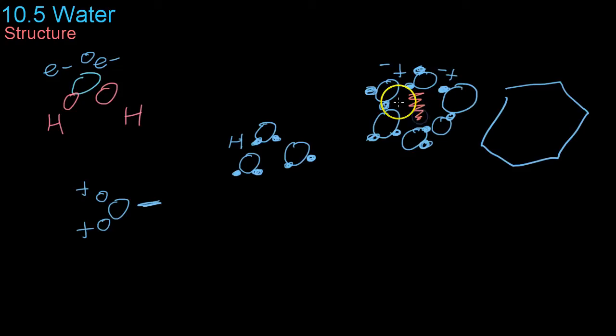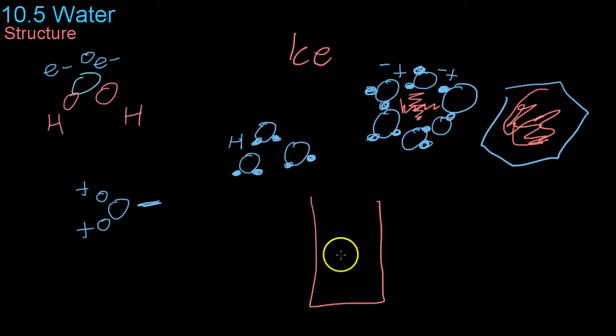This empty space in the middle actually has nothing in it. In its solid form as ice, it forms these hexagons with the empty space. This empty space actually makes ice less dense than water, which is why if you have a cup of water, the ice cubes will tend to float to the top, because they have molecules linked together in such a way that they are less dense due to this empty space in the middle.